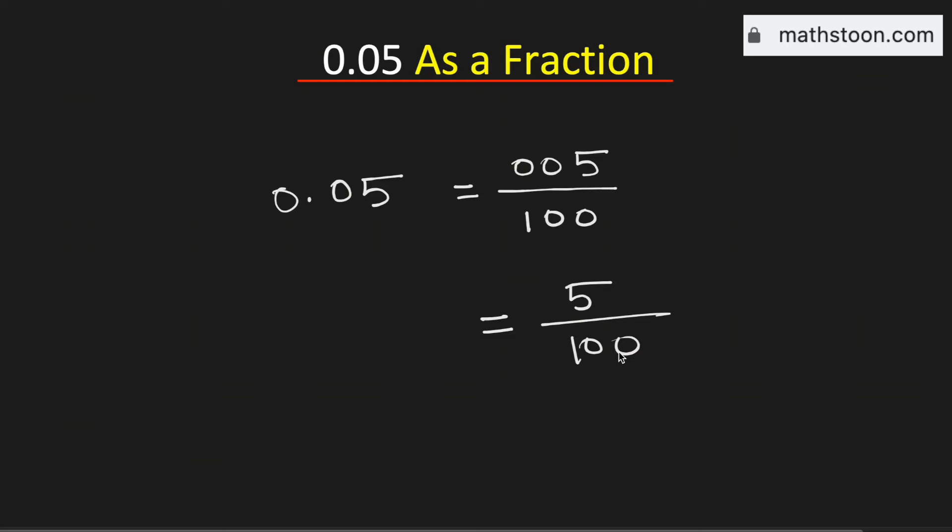Both the numerator and the denominator are divisible by 5, so we will divide them by 5. By doing so, we will get 1 in the numerator and 20 in the denominator.